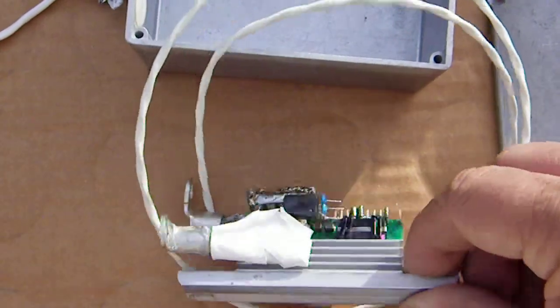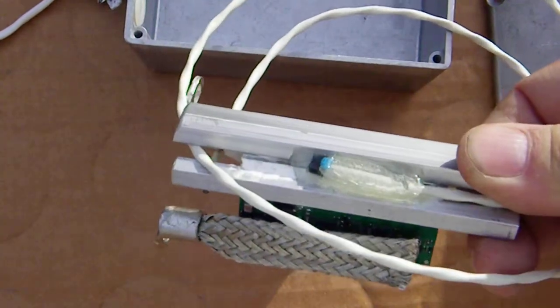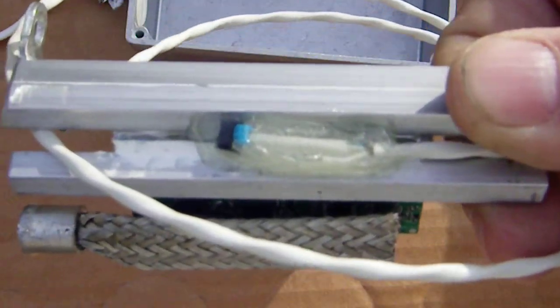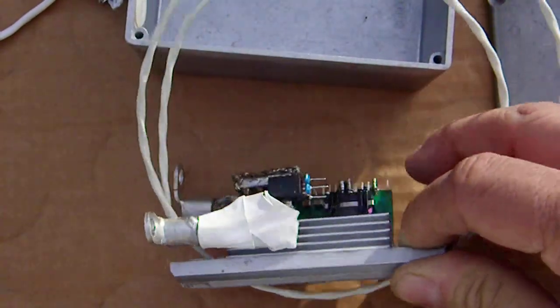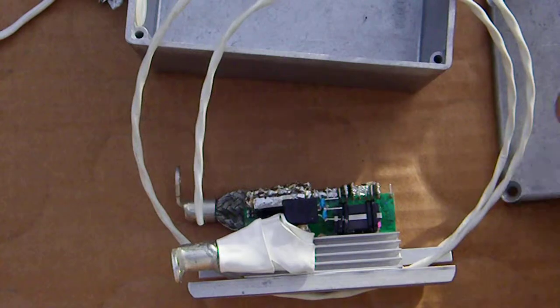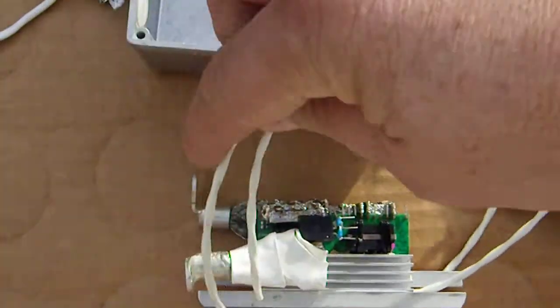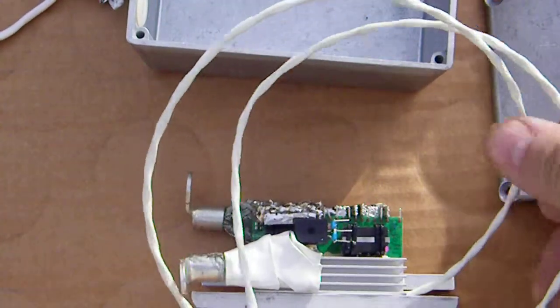This cable is going to a temperature sensor under here. All these parts can be bought at either DigiKey or Mouser. Now, let me get this out of the way.